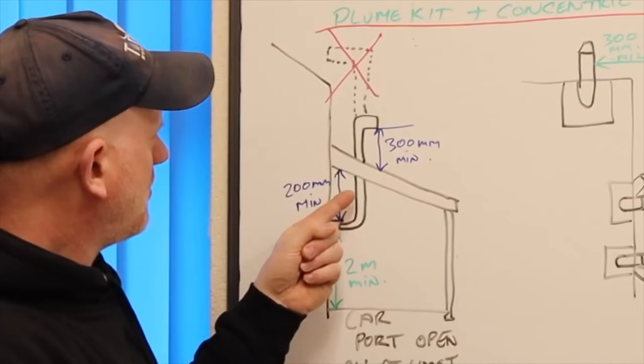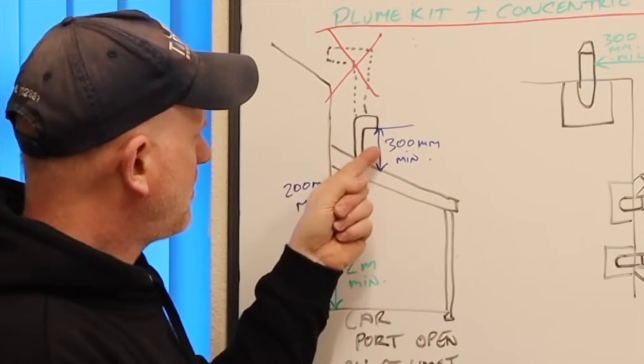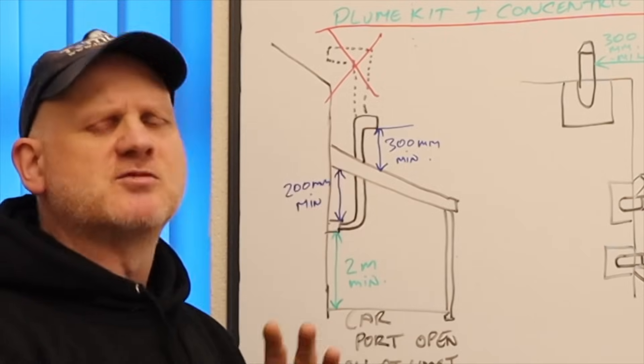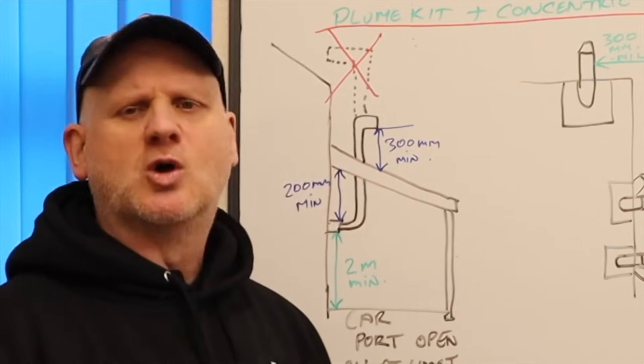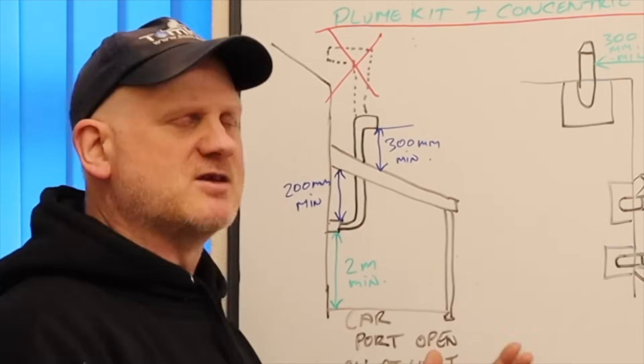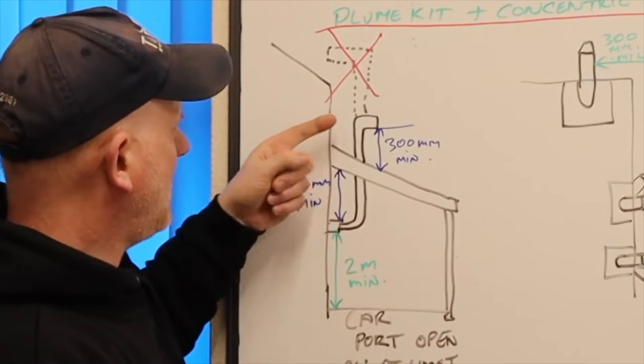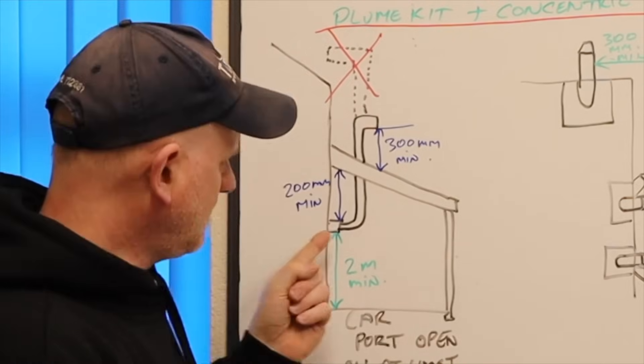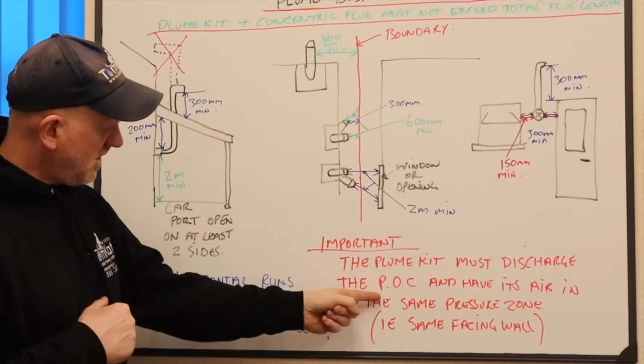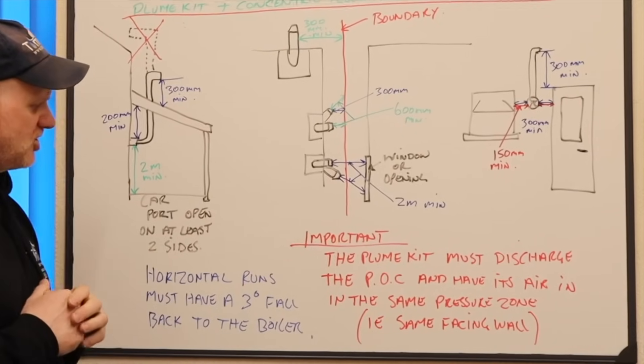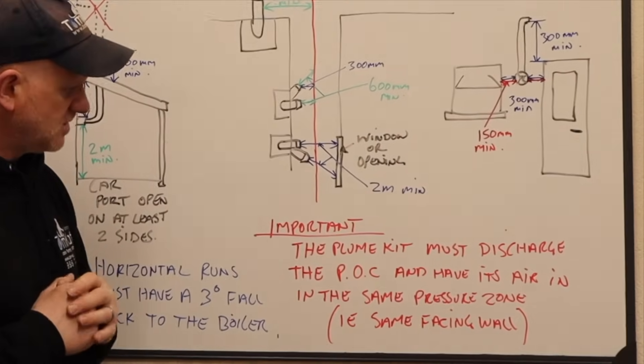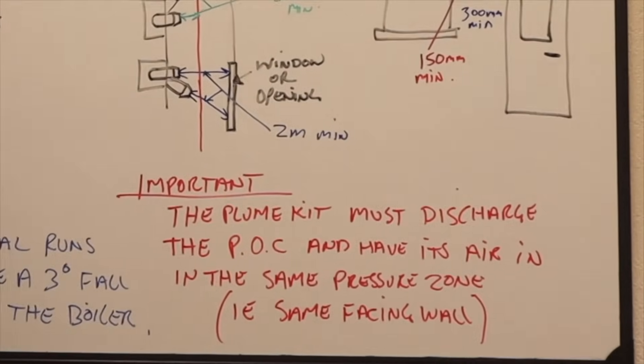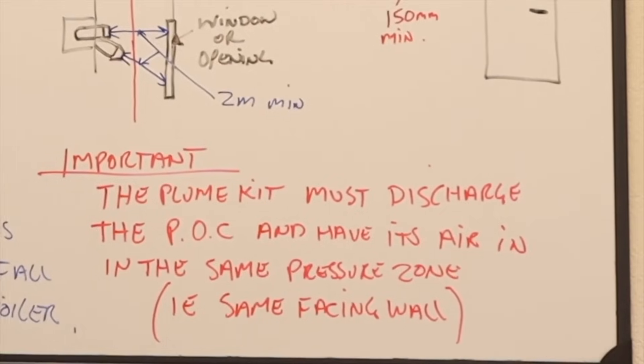So, when we come above the roof, we must be 300mm above the pitch of the roof, like we would be from ground level to stop snow and leaves and rain bouncing back in there. The other major thing is, it has to face the same way as the air inlet. Because the plume kit must discharge its products of combustion and have its air in, in the same pressure zone. That basically means facing the same way on the wall.